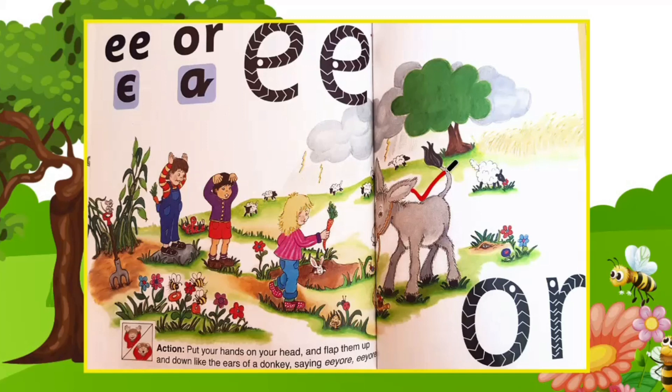An old donkey and some sheep live next to a small cornfield. Nora and Jakeem like to go and talk to the donkey. The donkey is always very pleased to see them. When he sees them coming, he brays E-O, E-O, E-O and waggles his ears up and down in greeting.